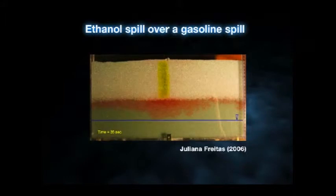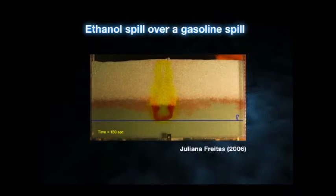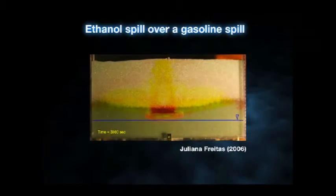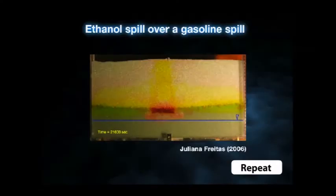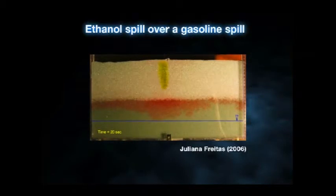Ethanol moves downward and dissolves here — you see that's mainly ethanol — but then we have a front with a deeper red color. Ethanol is moving to the sides, and you end up having a deep color here, with some residues and some ethanol. We'll need to do some exercises to understand all this detail.